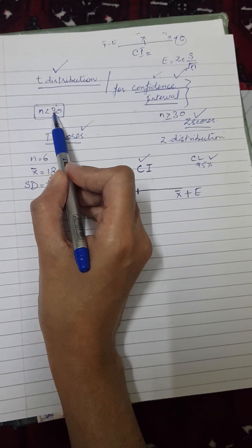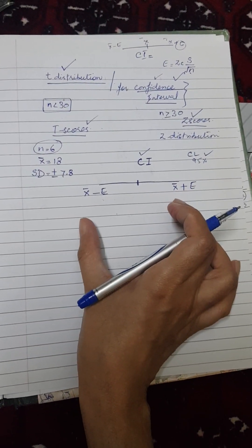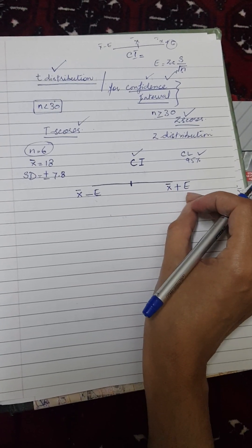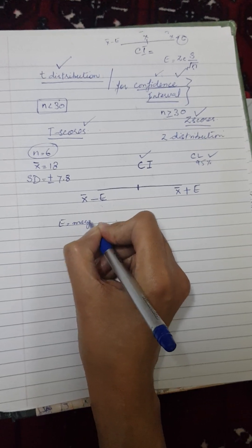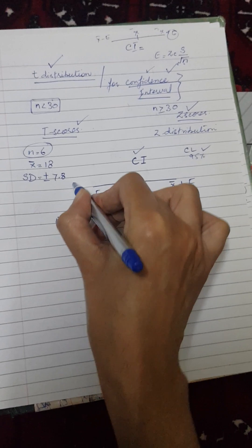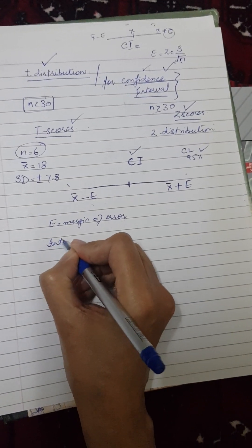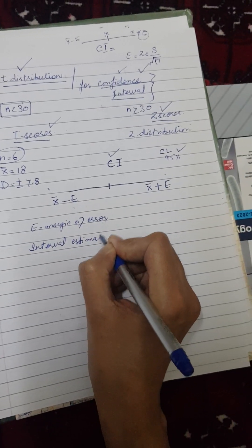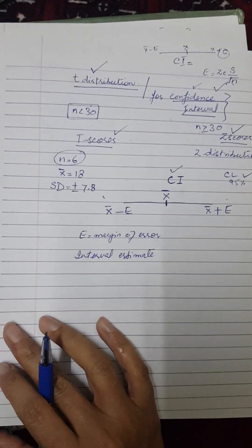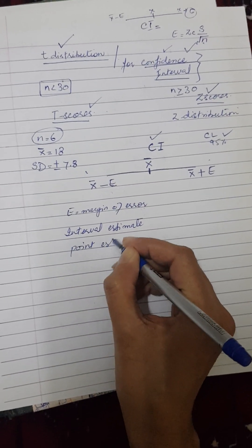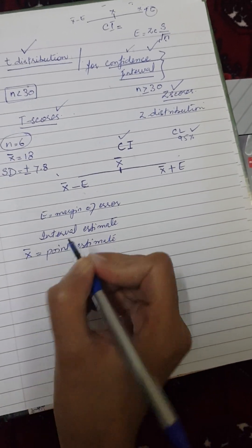Because our sample size is less than 30 — the sample size is just 6 — the basic structure will be the same: on the right side we have x-bar plus margin of error, and on the left side x-bar minus margin of error. This E is the margin of error. The procedure of calculating these two values is called the interval estimate, and the central value of the sample mean, that is x-bar, is also called the point estimate.